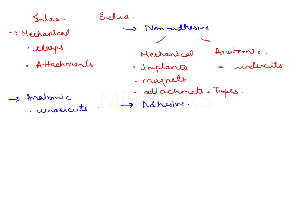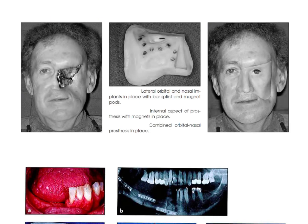Now I will be showing you a few images - keep an eye on how these prostheses look. This is an orbital prosthesis that restores the eyeball (ocular part) and the facial part. It has been retained with magnets: lateral orbital and nasal implants are placed in this area, and a magnet is inserted in the restoration at different aspects. This is an extraoral orbital prosthesis retained with implants and magnets.